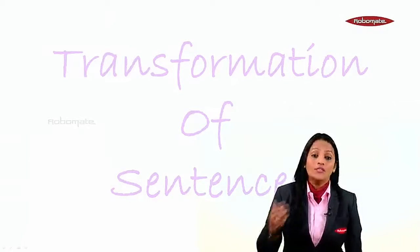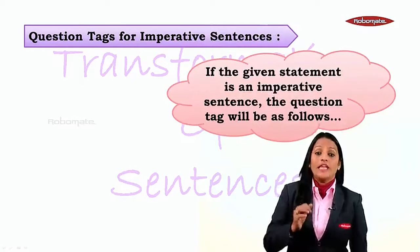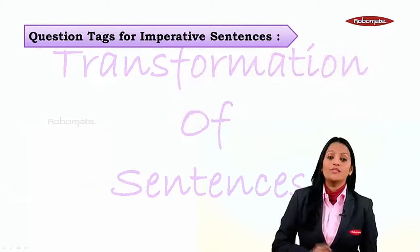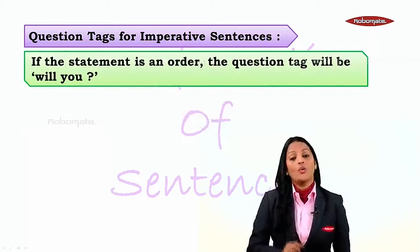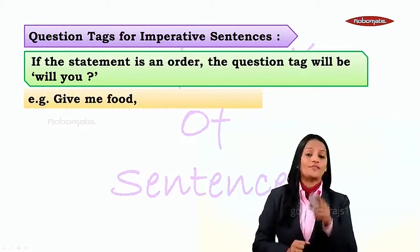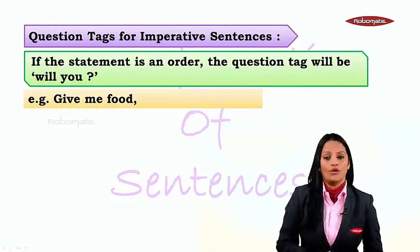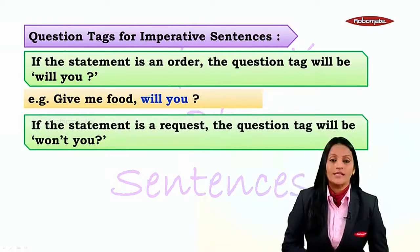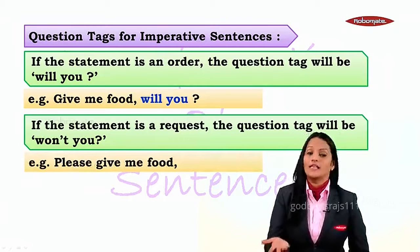The framing of question tags - some more important rules. Question tags for imperative sentences: if the given statement is an imperative sentence, the question tag will be as follows. Imperative sentences are either a request or command or order. If the statement is an order, the question tag will be 'will you'. Example: 'Give me food now' - you will say 'will you'. If the statement is a request, the question tag will be 'won't you'. Example: 'Please give me food' - here 'please' itself tells us it is a request, so you say 'won't you'.